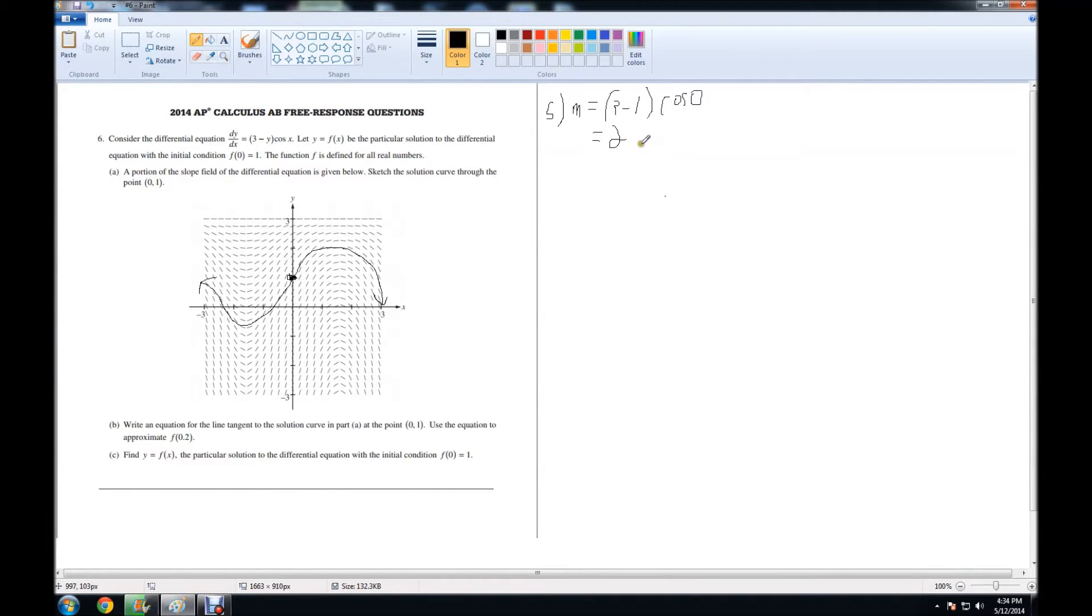Using our point and this slope, we can get the line tangent to the curve at that point. Using point-slope form, we have y minus 1 equals 2 times (x minus 0), or just x. Adding 1 to both sides, we get y equals 2x plus 1.